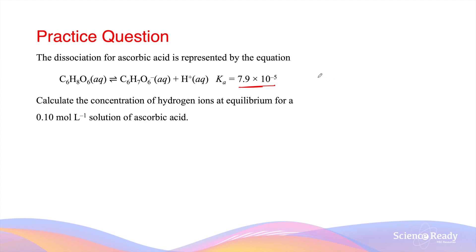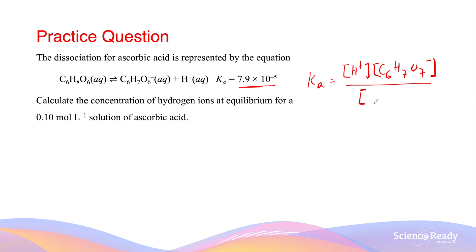To start the question, it's quite beneficial to write the expression for the Ka constant. This will be the hydrogen ion concentration as well as the conjugate base concentration, divided by the weak acid concentration — that's ascorbic acid. It's important to remember that these concentrations are not our initial concentrations, but the concentrations at equilibrium. Since we don't have these equilibrium concentrations, we need to construct an ICE table.